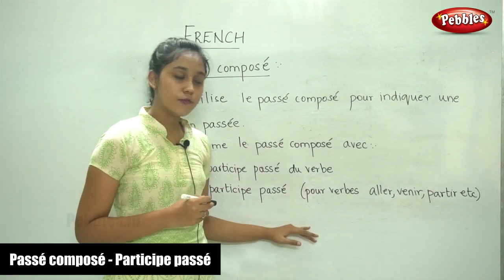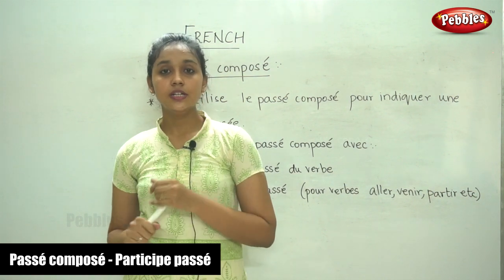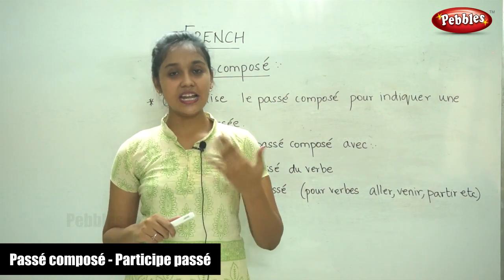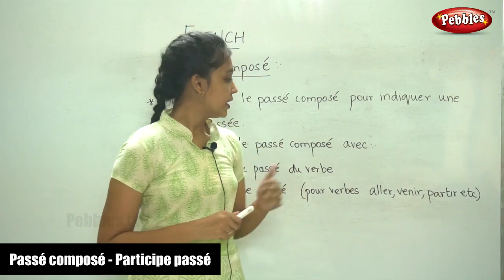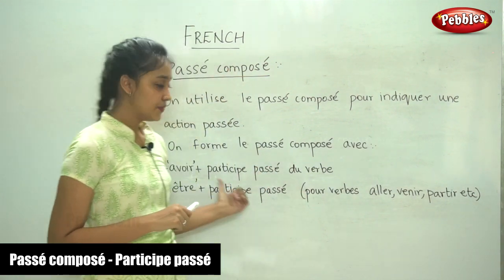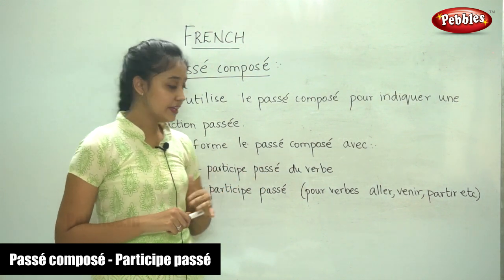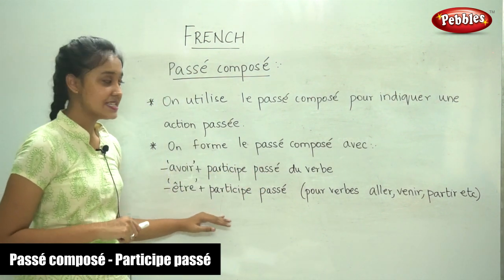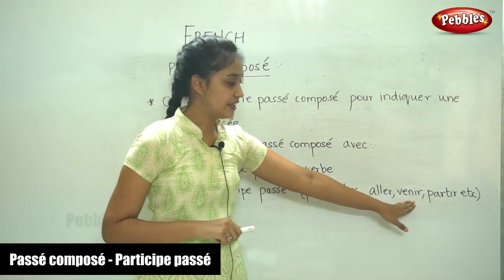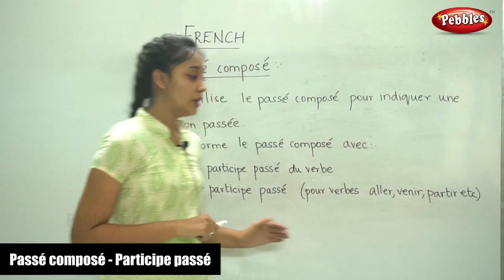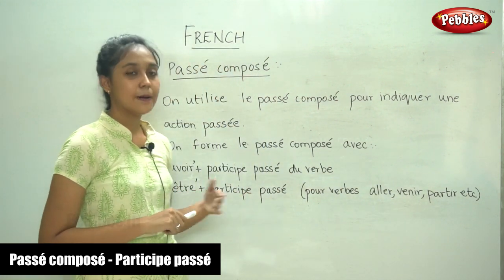Now you know the rules for passé composé. We use it to indicate that the action has already passed — it is done. The two rules are: avoir plus the past participle of that verb for most verbs, and for verbs of motion like aller, venir, and partir, we use être plus the past participle.